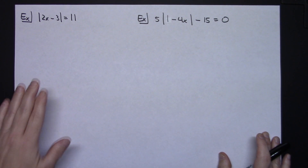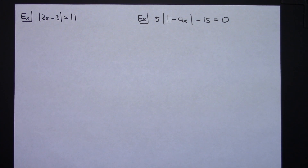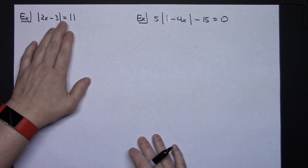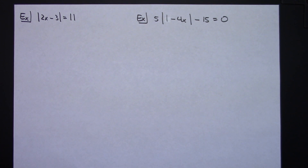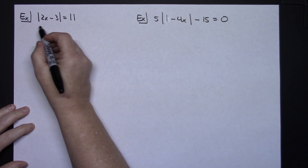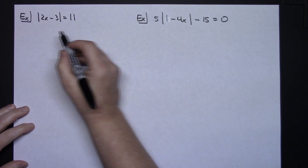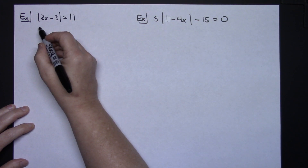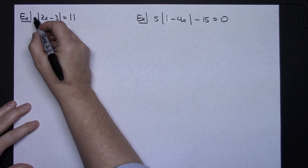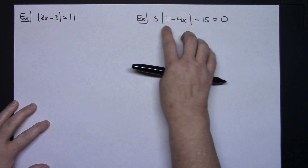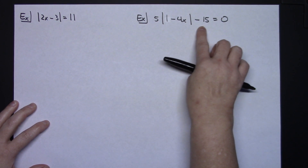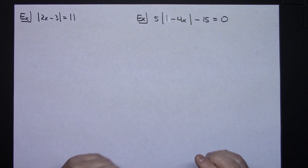We'll first start with the absolute value of 2x minus 3 equals 11. The first thing I notice is that I have an equal sign, absolute value bars, and 11 is positive. Also notice the difference between this problem and the second example: here the absolute value bars are isolated with nothing being multiplied or added to them, while in the second example we're multiplying by 5 and subtracting 15.